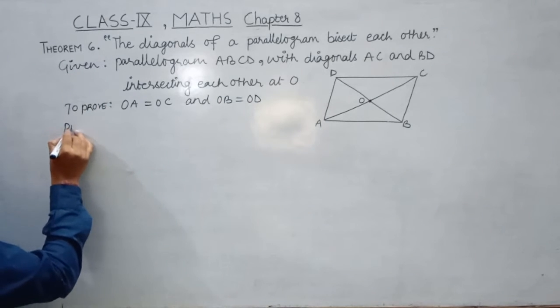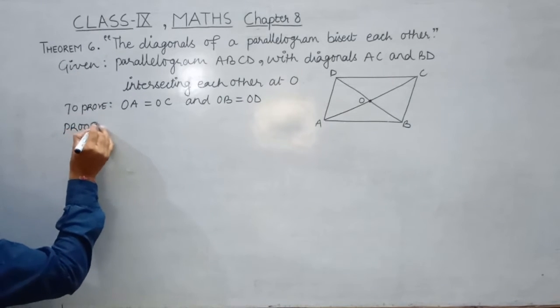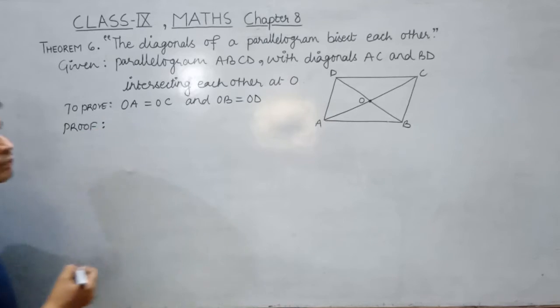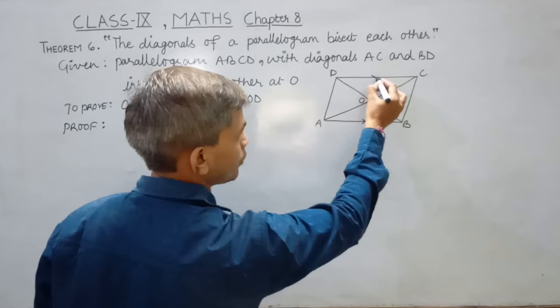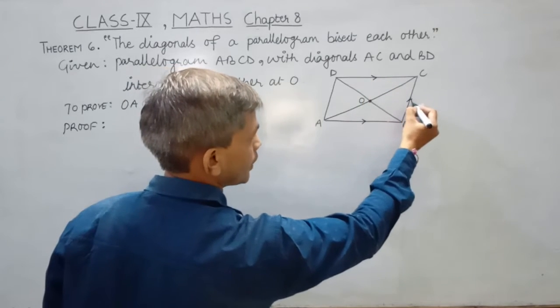Let's start with proof. As ABCD is a parallelogram, its opposite sides would be parallel as well as equal.